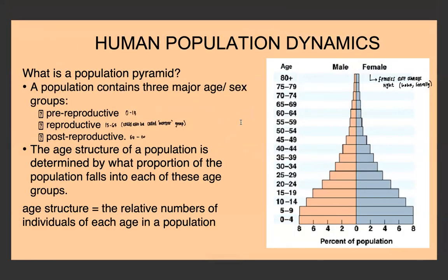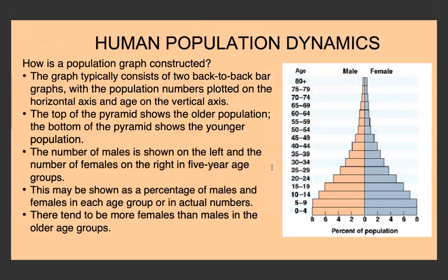The population pyramid contains three major age groups: the pre-reproductive stage (age 0–14), the reproductive stage (age 15–64), and the post-reproductive stage (65 and older). The age structure of the population is determined by what proportion of the population falls into each of these age groups. A country might have a very large pre-reproductive population, a medium reproductive group, and a very small post-reproductive population.